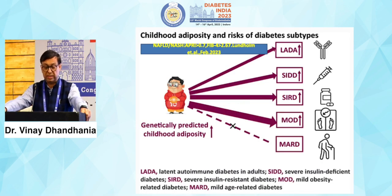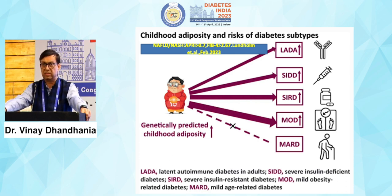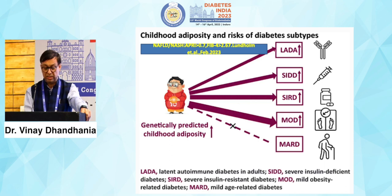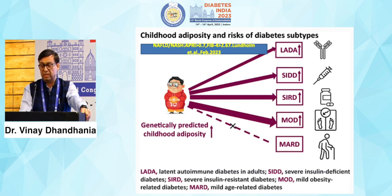Childhood adiposity and risk of diabetes subtypes is very important. Today there is a remarkable increase in childhood obesity — if you stand at a bus stop, you'll find 50% of children are obese, especially in urban communities. You need to include factors such as LADA, SIDD, SIRD, MOD, MARD, or genetically predicted childhood adiposity, all of which carry very high risk of NAFLD.